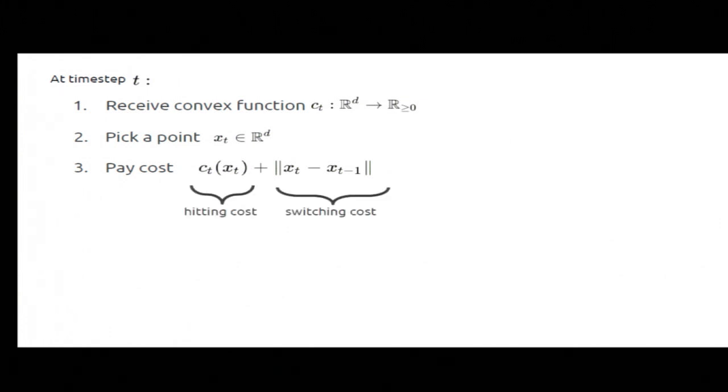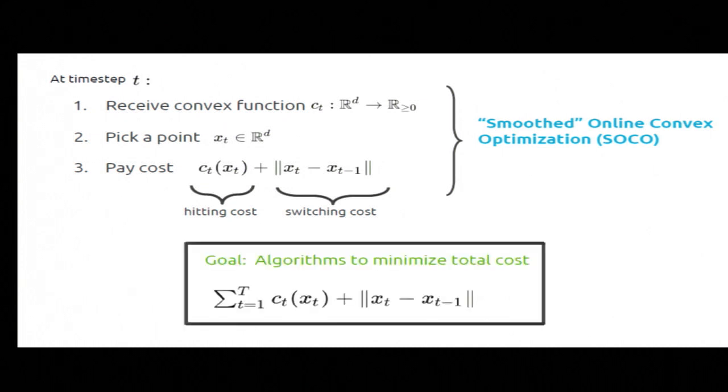Let me tell you about a model for these kind of problems. This is very similar to the problem Ashok mentioned, the online convex optimization. At each round, I receive a convex cost function. I pick a point, which represents my decision. And then I pay the cost of that point plus this extra term, which is a regularizer. We call it a switching cost. It penalizes me for changing my mind. The first difference is that I get to see the cost before I pick the point. And the second difference is that there's a switching cost. This problem is called smooth online convex optimization because it's a smooth version of this classic OCO problem. And of course, my goal is simply to minimize the total cost.